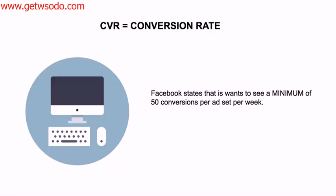Does that mean you cannot optimize for purchase? Absolutely not. I've seen enough e-commerce campaigns to tell you that optimizing for purchases a lot of the time still works better than optimizing for the step beforehand. However, if your campaigns are not performing the way you want them to, this could be why. If you can increase your CVR — your conversion rate — you will ultimately increase your ad quality and relevancy, which means you'll have a higher standing in the auction process. That's how you hack the algorithm.